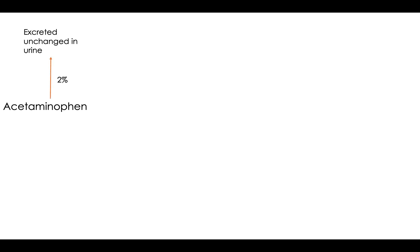When you take acetaminophen, 2% of it is just going to be excreted unchanged in your urine. And 90% of it is going to go through sulfonization and glucuronidation, and then it's just going to be peed out. Right there, we already have 92% of the acetaminophen that we took excreted.